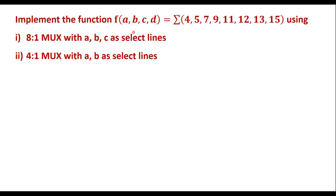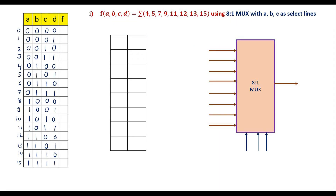This is the given function where we have four variables a, b, c, d. When implementing using a MUX, we use these variables as select lines. In the first case, we implement using an 8-to-1 multiplexer considering a, b, c as select lines. In that case, we are supposed to consider d as the data line.